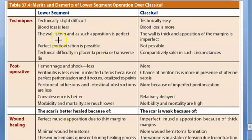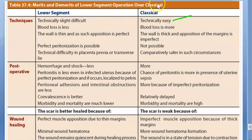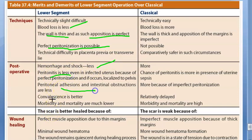Sutures may become loose and gutter formation on the inner aspect is more likely. In future pregnancies, scar rupture risk is less with LSCS but more with classical. Lower segment is technically more difficult but has many advantages: less blood loss, thin wall, perfect opposition, better peritonization, less hemorrhage and shock, less peritonitis, less adhesions, and lower morbidity and mortality.